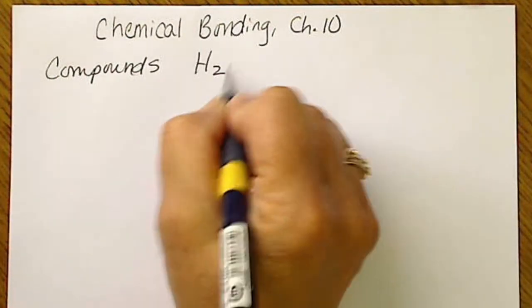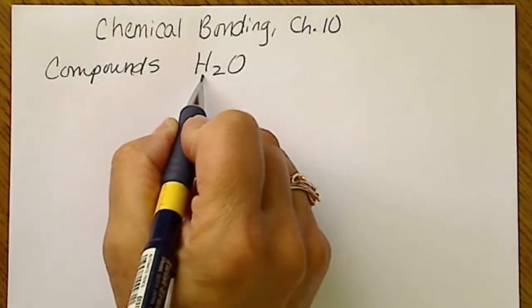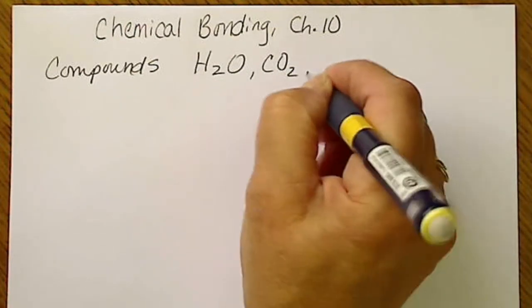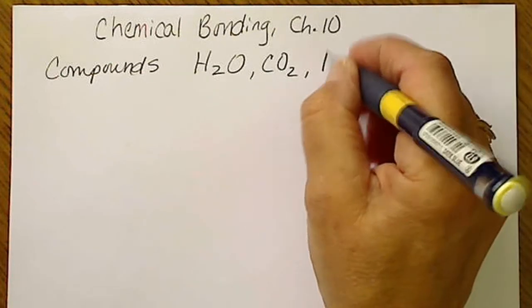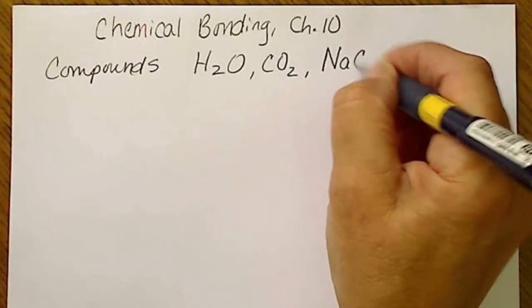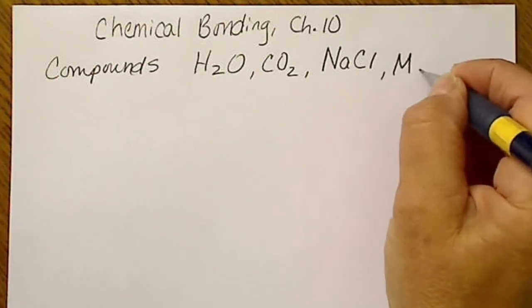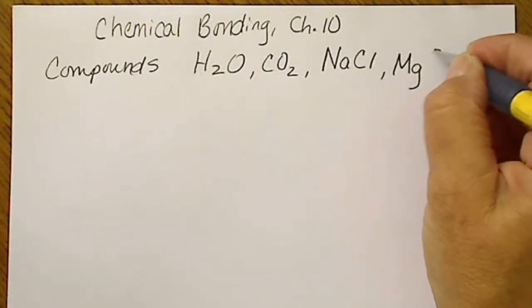For example, H2O is a compound because it has hydrogen and oxygen in it. Carbon dioxide is a compound. Sodium chloride is also a compound. Magnesium sulfate, that's epsom salt.